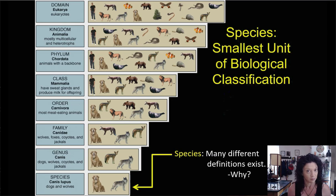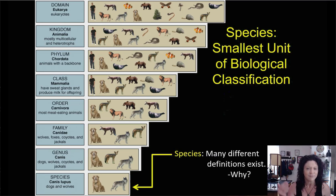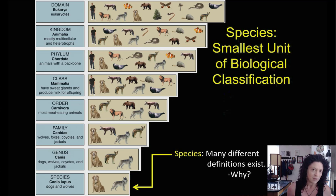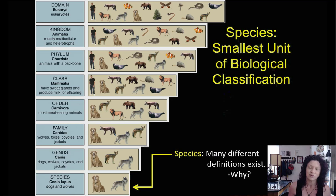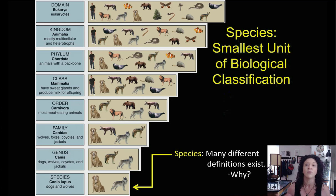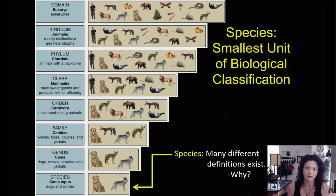What we call biological classification is just an organizational system that we humans came up with to try to understand the huge diversity we see in the world around us. We like to organize things — that's how our brains work. Keep in mind, the classification system I'm about to show you, we made it up. It doesn't exist in nature. It's a set of definitions, of categories that we created to try to better understand the relationships between living things. The natural world isn't always going to fit cleanly into these classification boxes. Classification is messy. Nature doesn't necessarily abide by our rules.